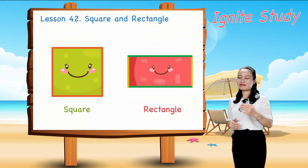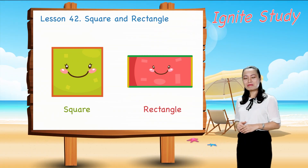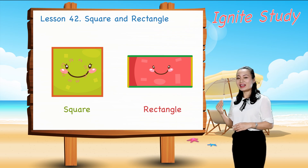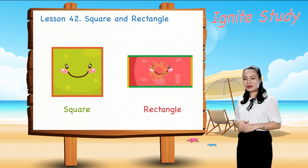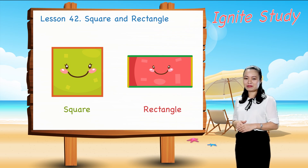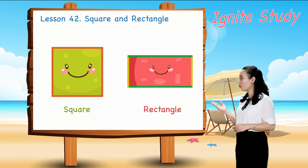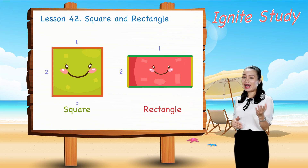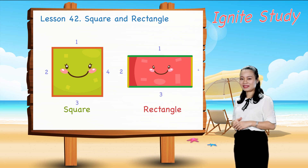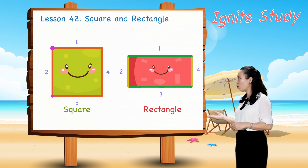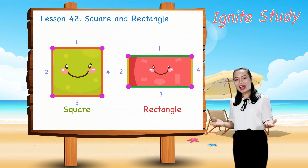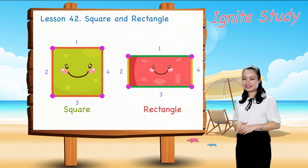Can you see? Both the square and the rectangle have 4 straight sides and 4 corners. However,